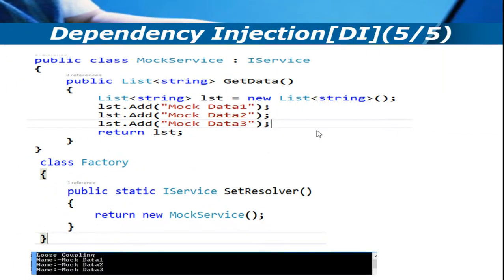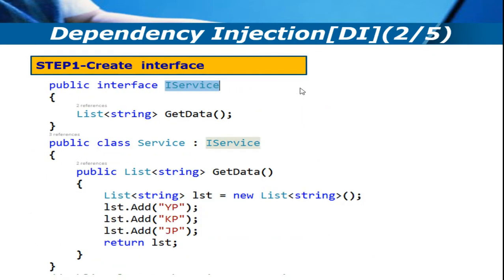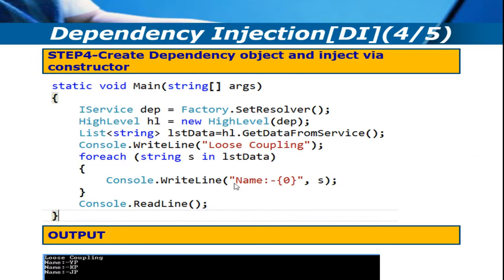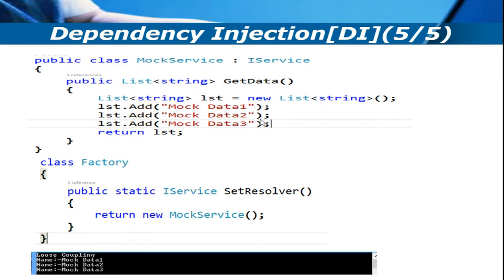Now let me explain how dependency injection provides testability. Assume the data is coming from a database and we are populating an MVC grid. If the database is not ready but one person is working on database retrieval while another is working on data grid binding, we can create a mock service and provide data to the second person so they can bind the data inside the grid.